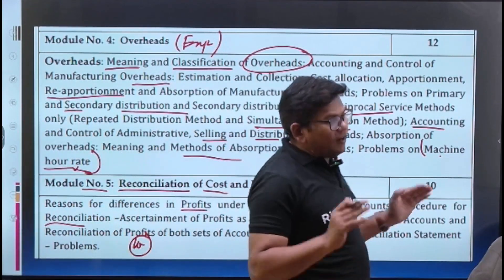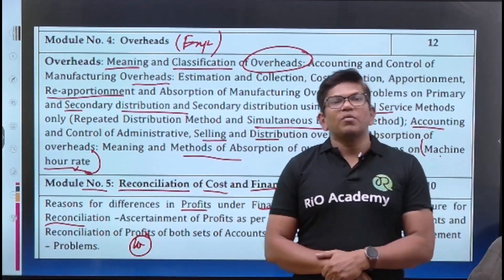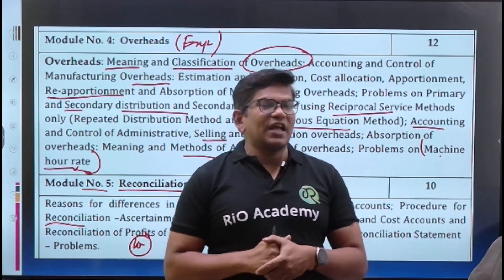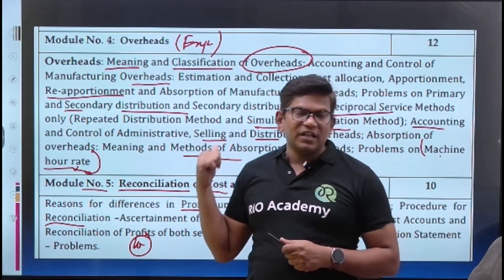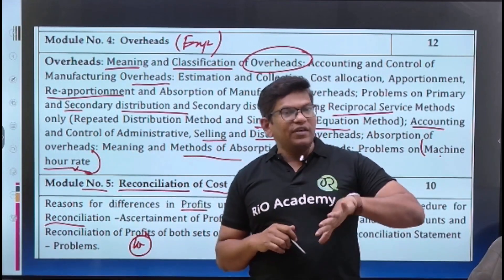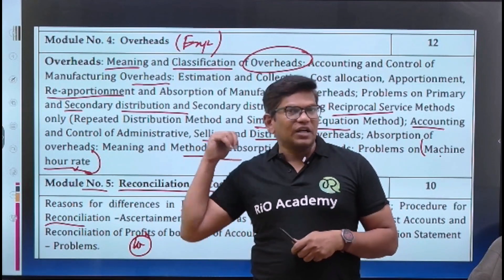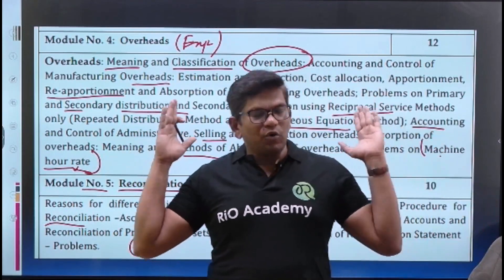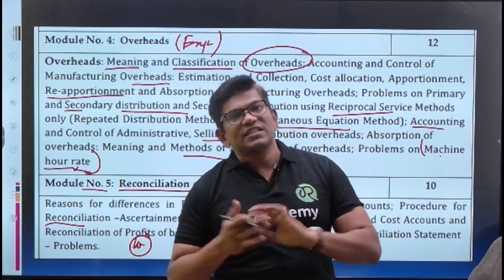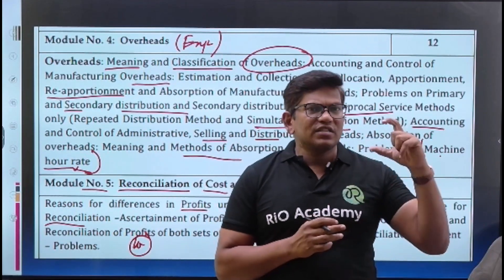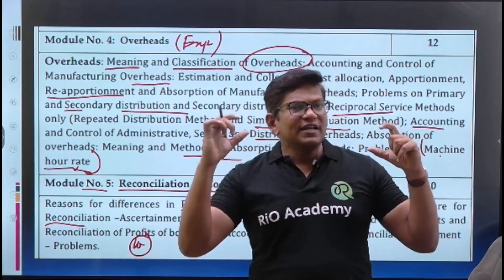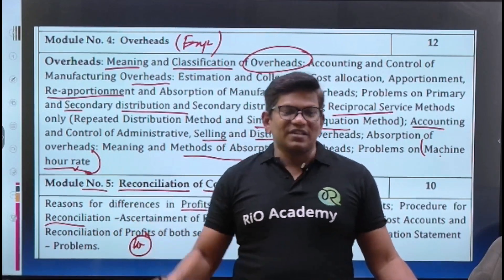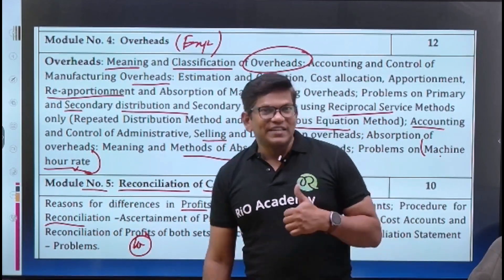This chapter also has around 10 marks as a guaranteed question. So that covers the entire syllabus of cost accounting for BBA third semester. Daily classes are coming — please like, share, and subscribe. We will upload videos every evening around 6:30. Get ready — we are going to cover tons of problems and every concept in a very systematic and simple manner. Thank you!